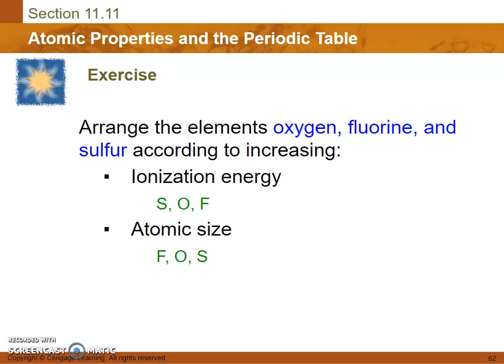It's the exact opposite for atomic size. Fluorine is going to be the smallest, followed by oxygen, and then sulfur, because fluorine has a very small atomic size, very small atomic radius, because it holds very tightly to its electrons.